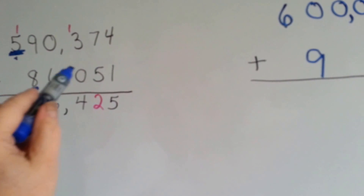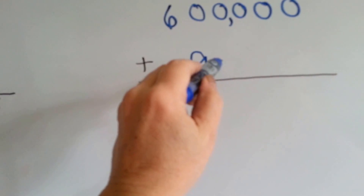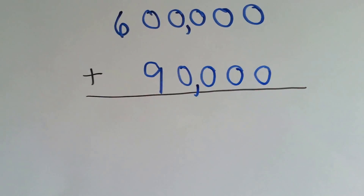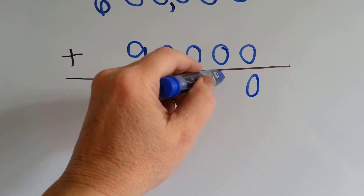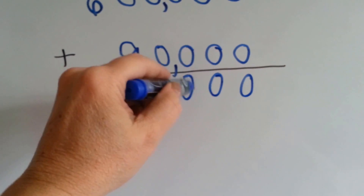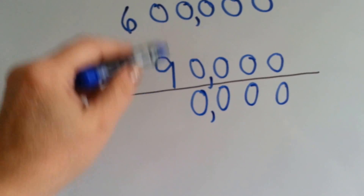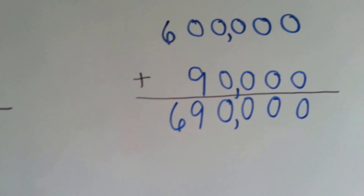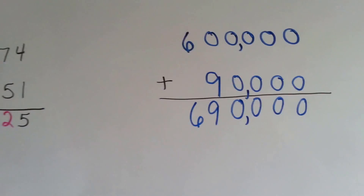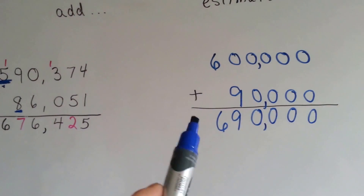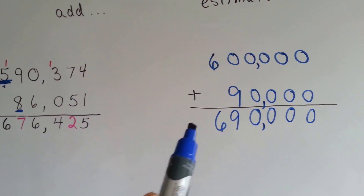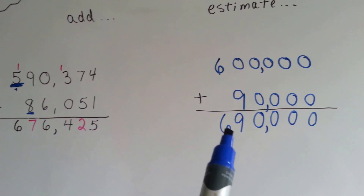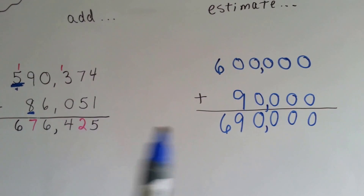And all these turn into zeros, so we're going to need 1, 2, 3, 4 zeros. We put our comma in. Now we can add: 0 plus 0 is 0, 0 plus 0 is 0, put our comma in, 9 plus 0 is 9, drop the 6. And the answer is 690,000 as an estimate. Now an estimate is not an exact number — it's about the amount. So the real number was 676,000 and this is 690,000, so that's the estimate.